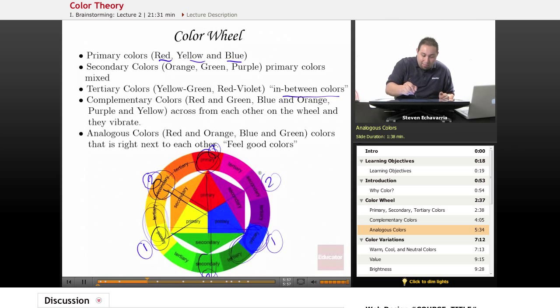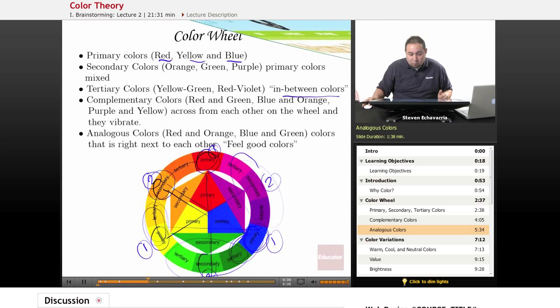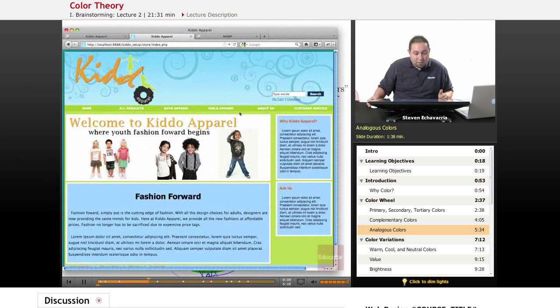Like these purples here, if you put them all together, they'll be fine. Just like these greens here. And I'll show you that example right here. Right here, I used this, which is what you would consider analogous colors, the feel-good colors, because they're all so close. And there's three different shades right there of green, but it makes sense.